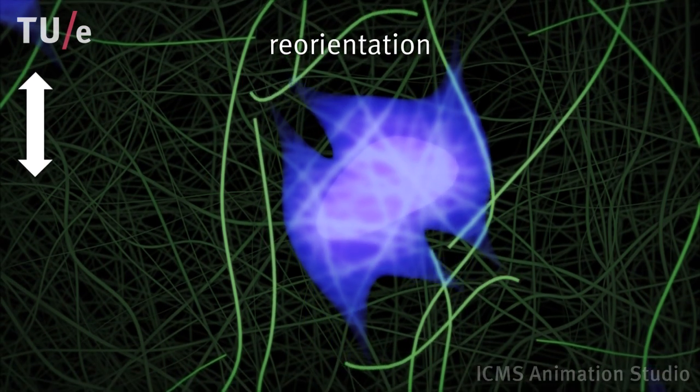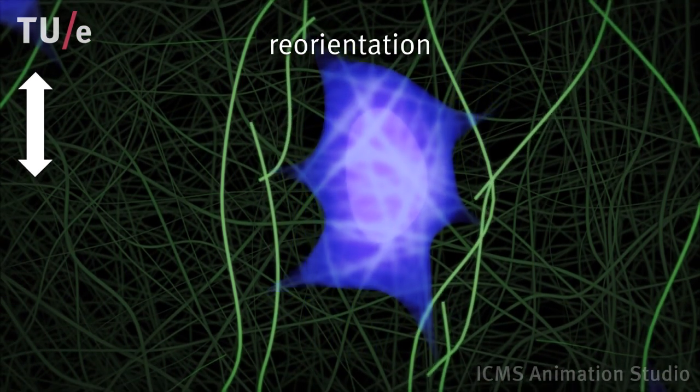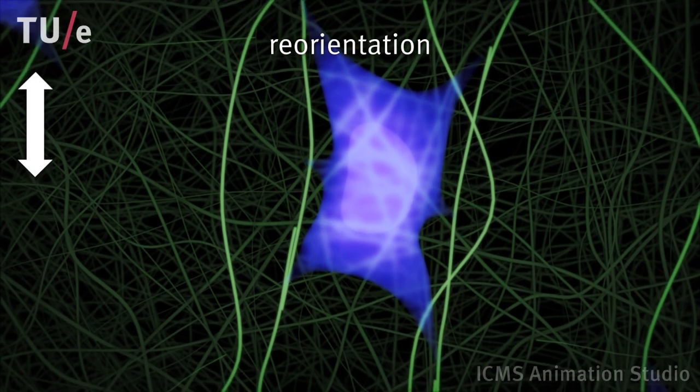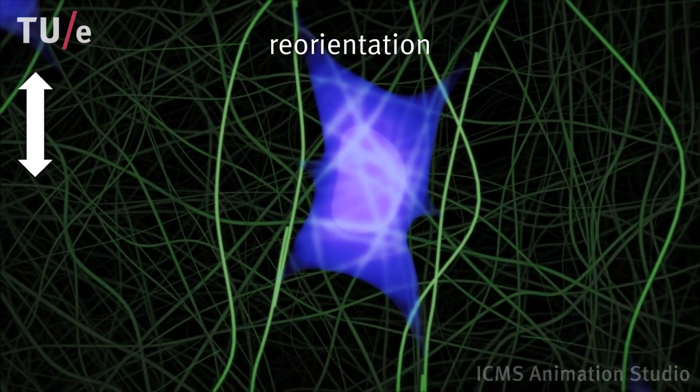During this process, the cells can rotate and align parts of the fibrous matrix by pulling at the fibers. This process is called reorientation.